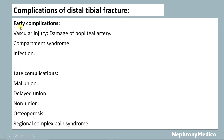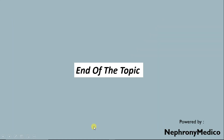Early complications include vascular injury such as damage to the popliteal artery, compartment syndrome, and infection. Late complications include malunion, delayed union, nonunion, osteoporosis, and regional complex pain syndrome. End of the topic.